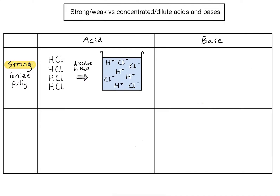If we represent that in a chemical equation, you'll notice that the arrow we use is a one-directional arrow, which indicates that all of those HCl molecules are going to ionise when dissolved in water. The same definition applies to strong bases.